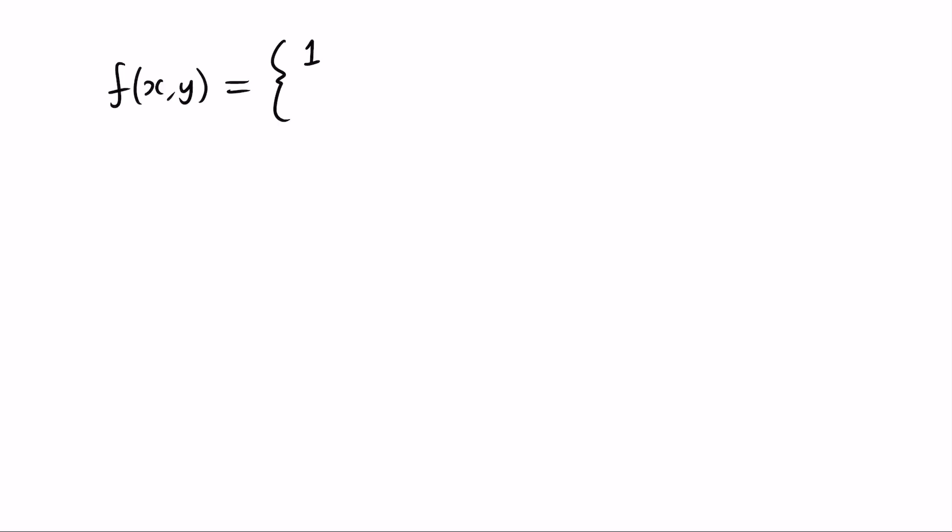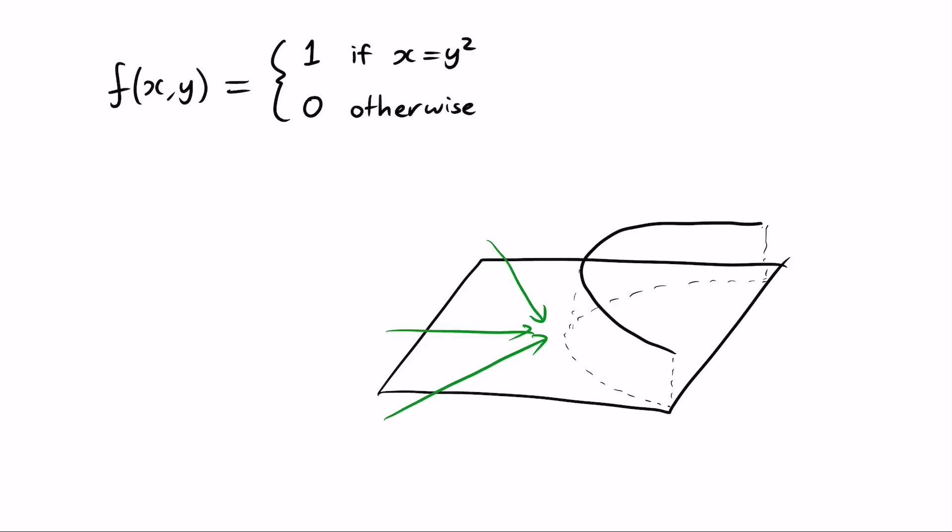Define the function f to have the value 1 whenever x equals y squared, and 0 otherwise. This is not really possible to show on the graphing calculator, so let me just draw it by hand. There we are. The function is equal to 1 only on an infinitely thin parabolic line. If we approach 0 from this side, we obviously get a limit of 0. If we go along a straight line on this side, there is always a point where we cross the parabola, and everything after that point is 0, so once again the limit is 0. And finally, if we approach tangentially to the parabola, that is, along the line x equals 0, we never reach the parabola before reaching the centre, so the limit is still 0. So, that's it. That's the counterexample.